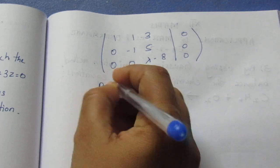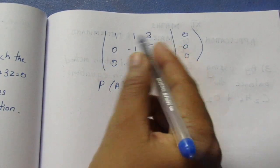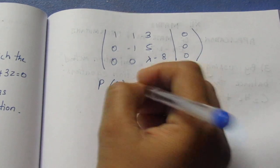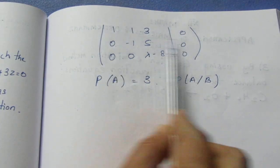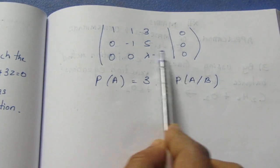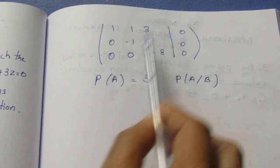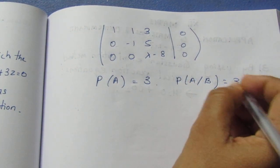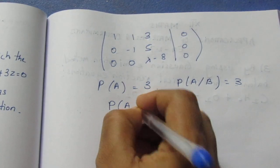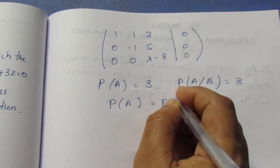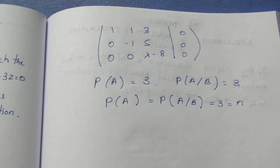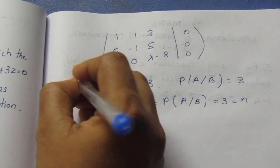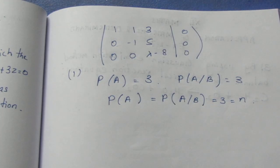Now, rank of A: looking at the matrix, there are non-zero elements in all 3 rows. So rank of A slash B equals 3. Rank of A equals rank of A slash B equals 3, which equals N. Therefore the system has a unique solution, which is the trivial solution.